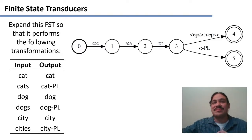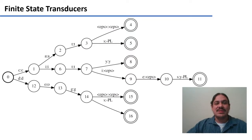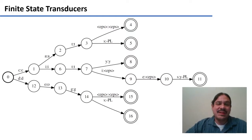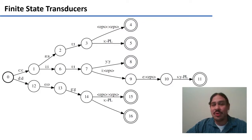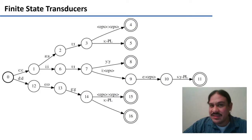Pause the video now, and welcome back. So, this finite state transducer would look something like this. As you go from 0 to 1, 1 to 2, 2 to 3, 3 to 4, we have "cat" — these are the ones we have from before.